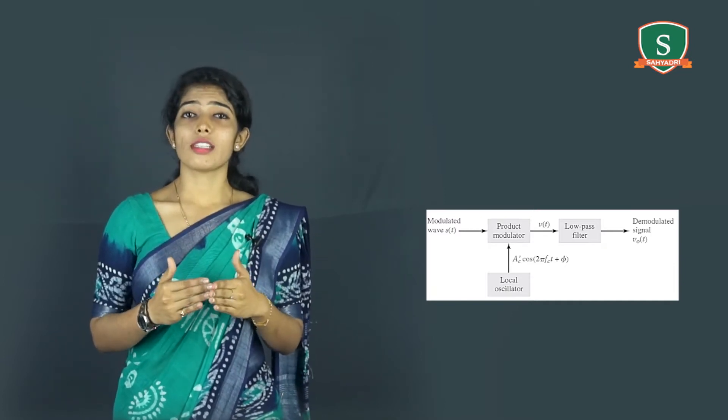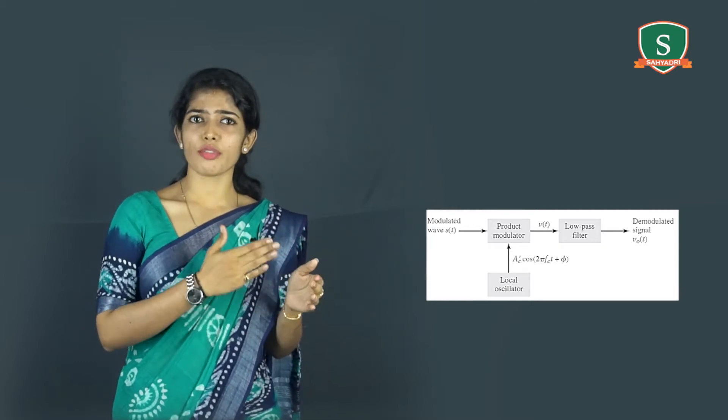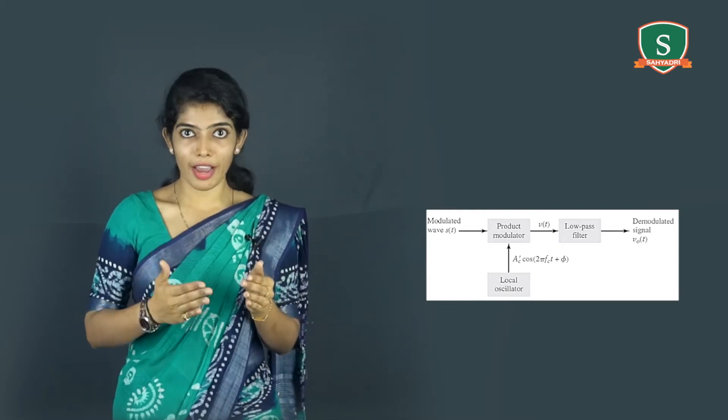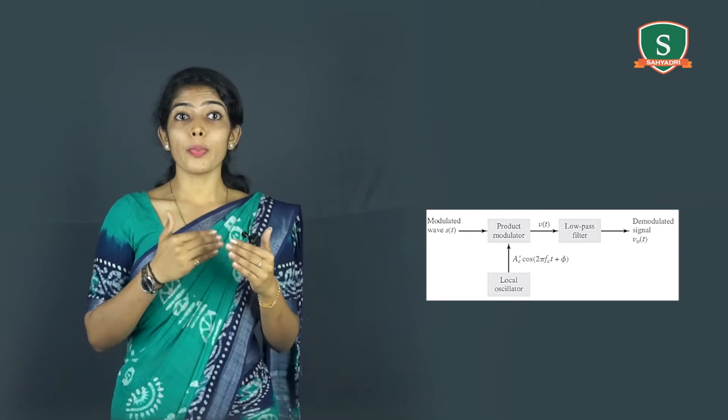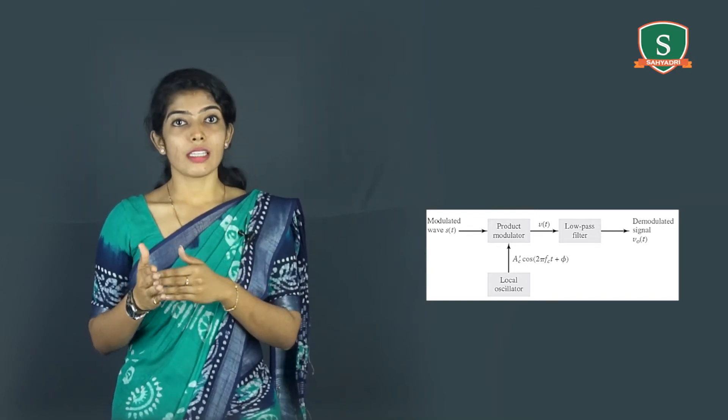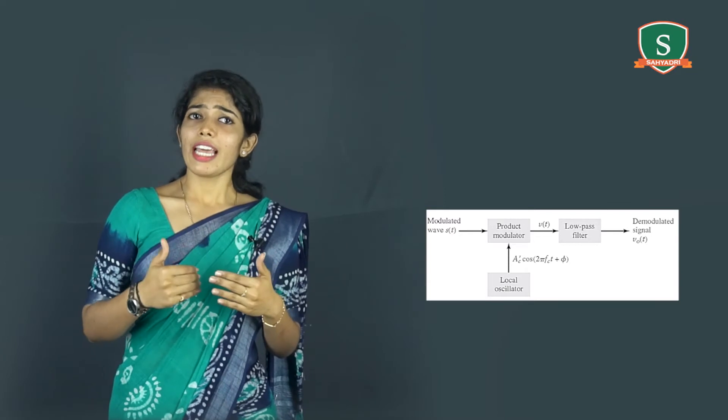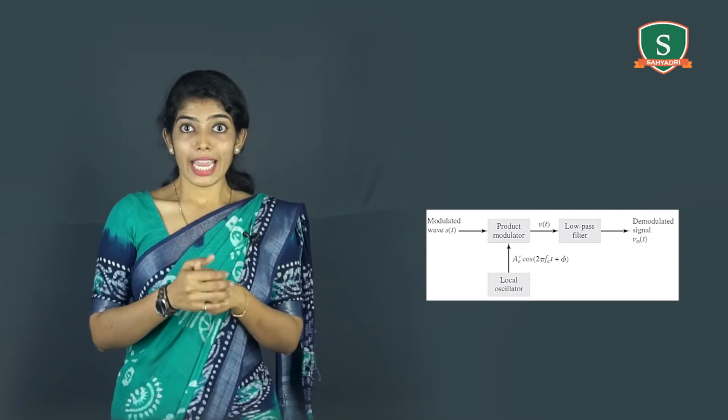Thus, denoting the local oscillator signal by Ac' cos(2π fc t + phi) and using Ac cos(2π fc t) m(t) for the DSB-SC wave s(t), we find that the product modulated output of